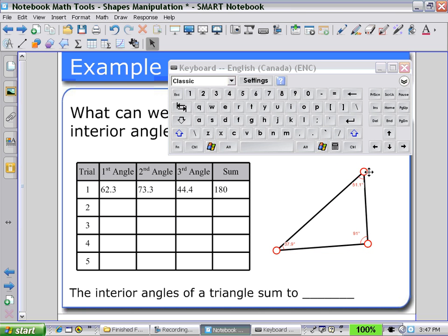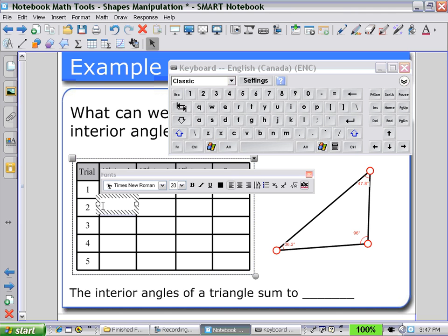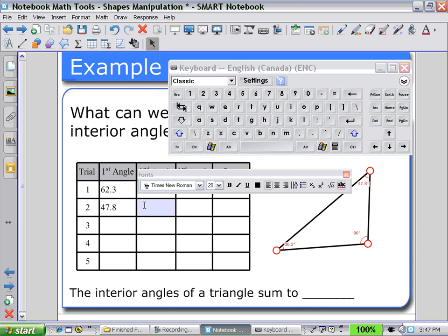Notice that the angles recalculate, and then the students can enter the new value into the table: 47.8, 36.2, and 96 degrees.